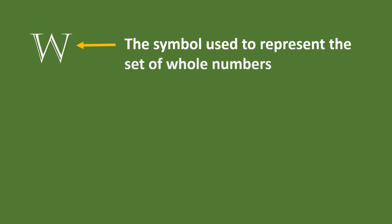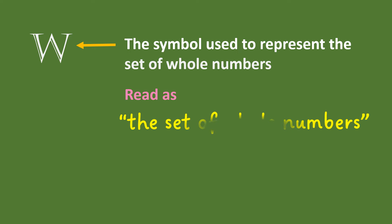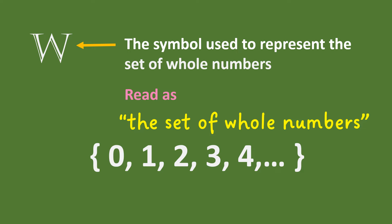The capital letter W represents the set of whole numbers. You read it as the set of whole numbers. The set of whole numbers includes 0, 1, 2, 3, so on and so forth, until infinity.